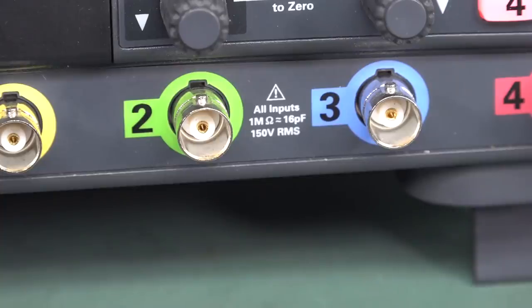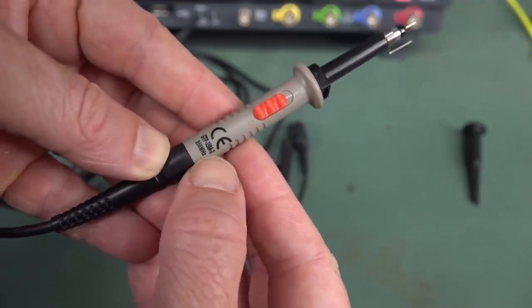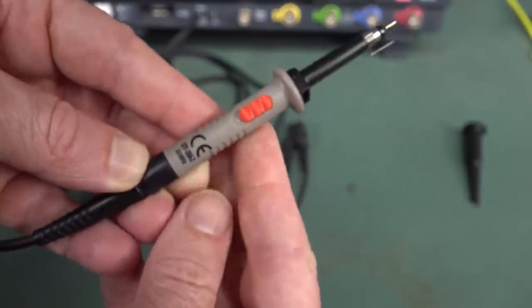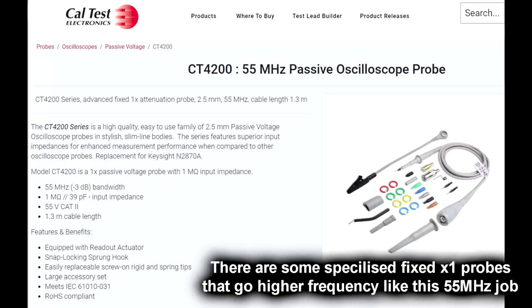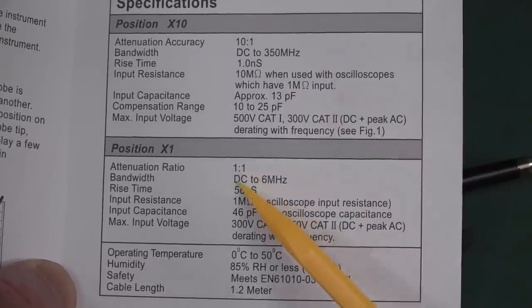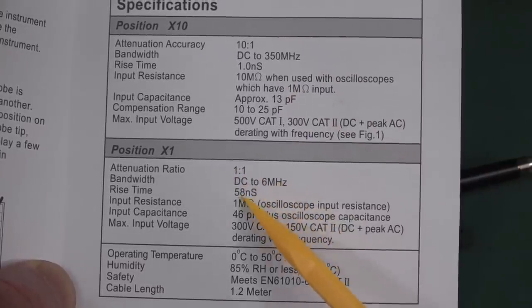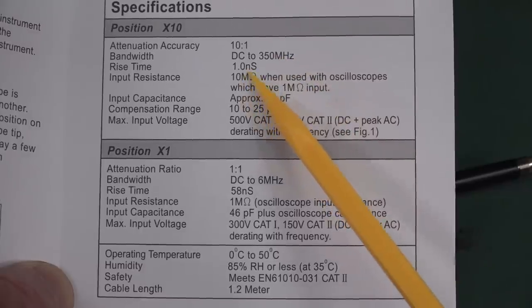So what you're basically doing there is tweaking the capacitor across that 9 mega resistor in the front of the probe to the input capacitance of the oscilloscope, which is usually around about 15 pF, give or take. And the thing you have to understand with these is that in x10 mode, you'll get your rated 350 megahertz bandwidth or whatever it is. But you put it in x1, you're going to get well under 10 megahertz.